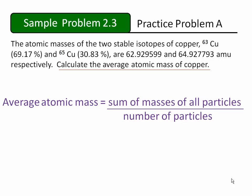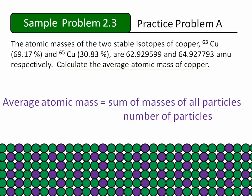So imagine a large number of copper atoms, even more than you see here. Some of those atoms have a mass number of 63, shown in green, and some of them have a mass number of 65, shown in purple. And the question is, what is the average mass of all these atoms?